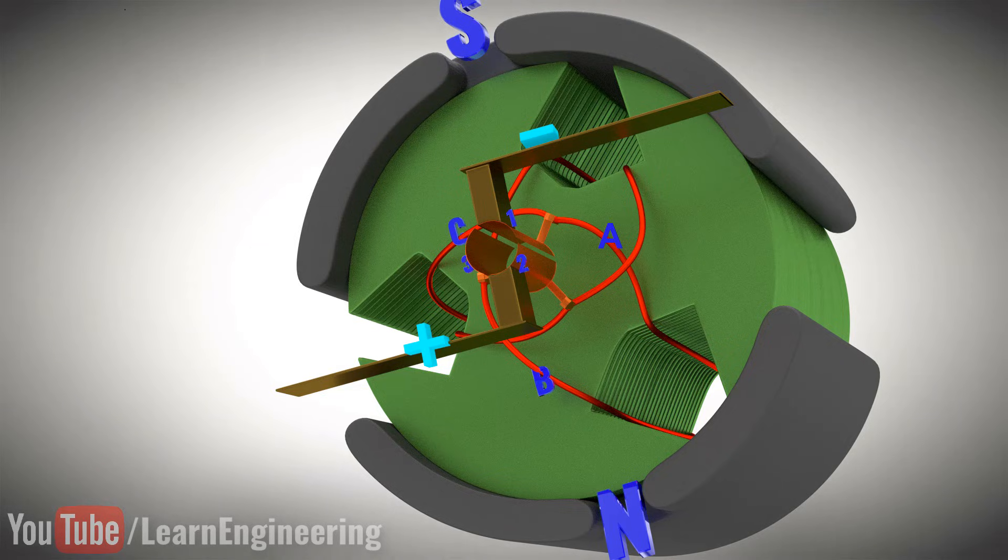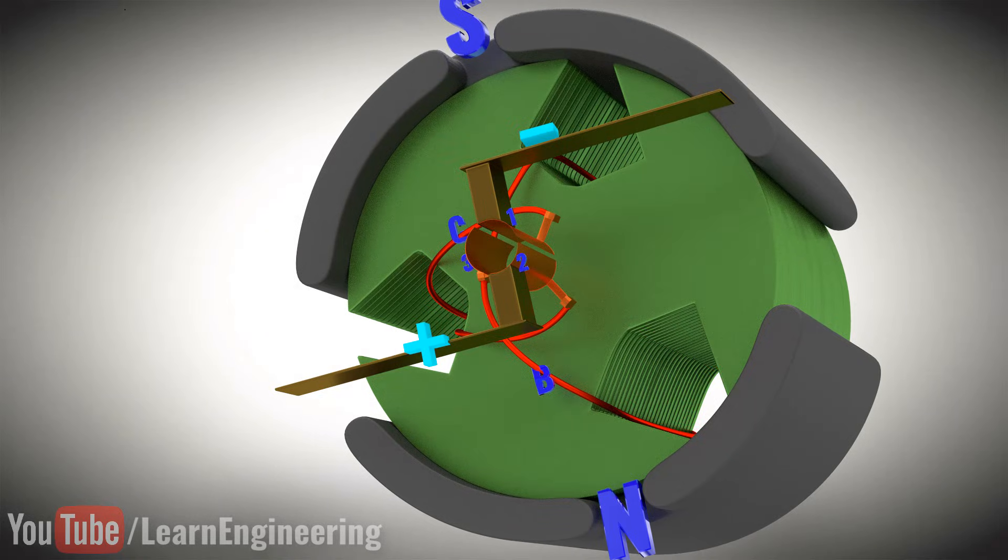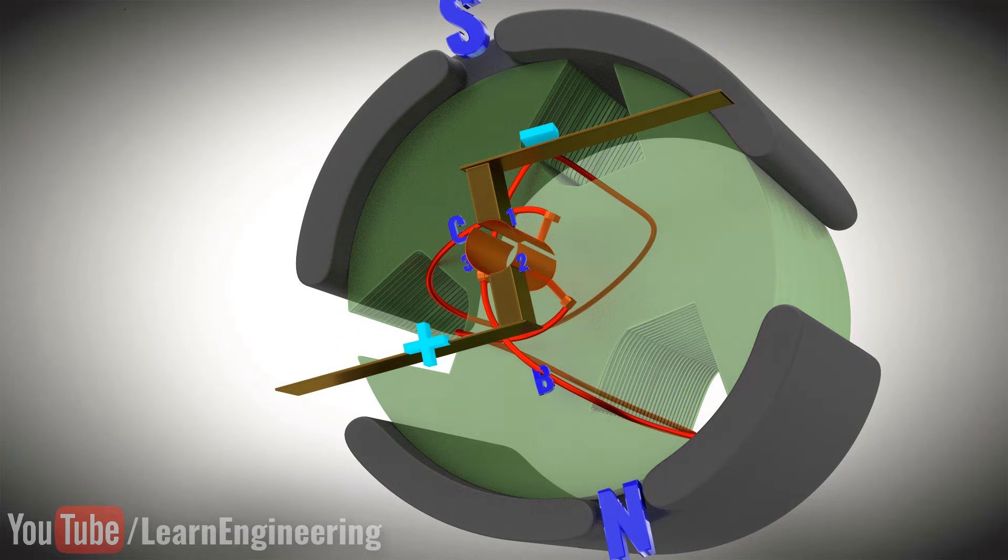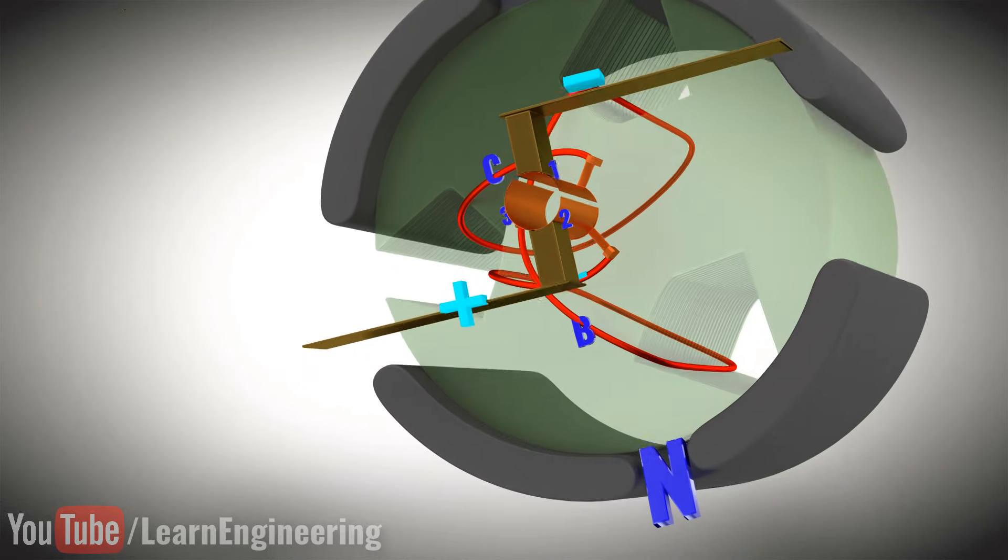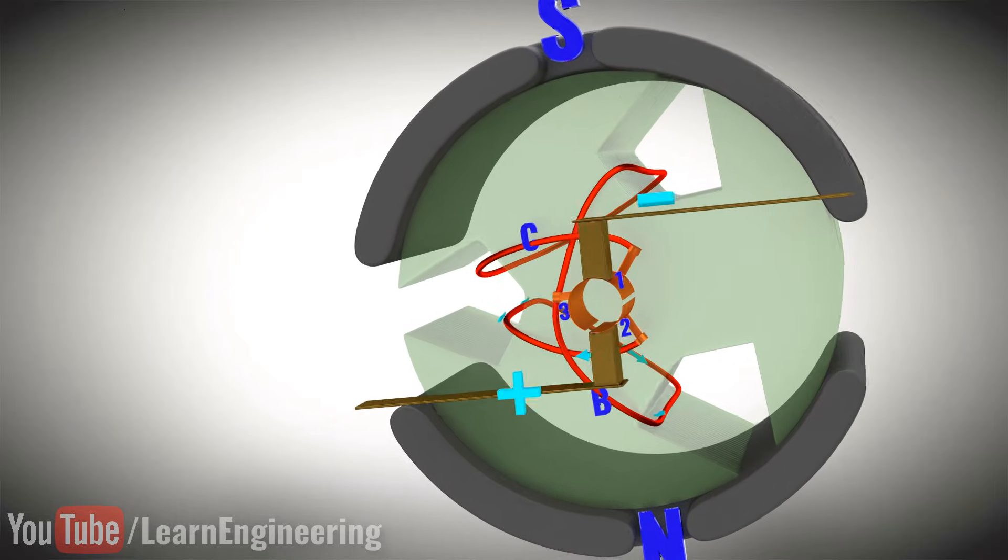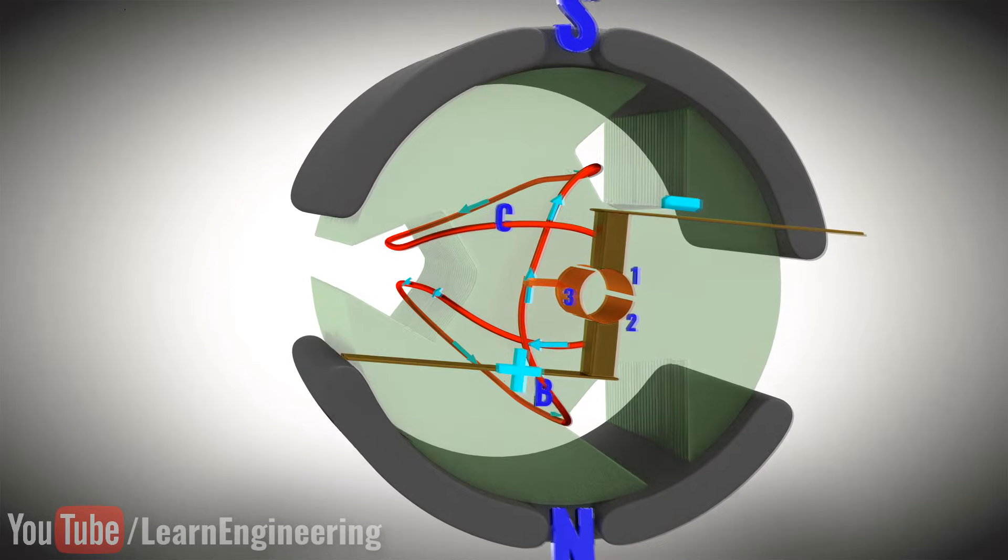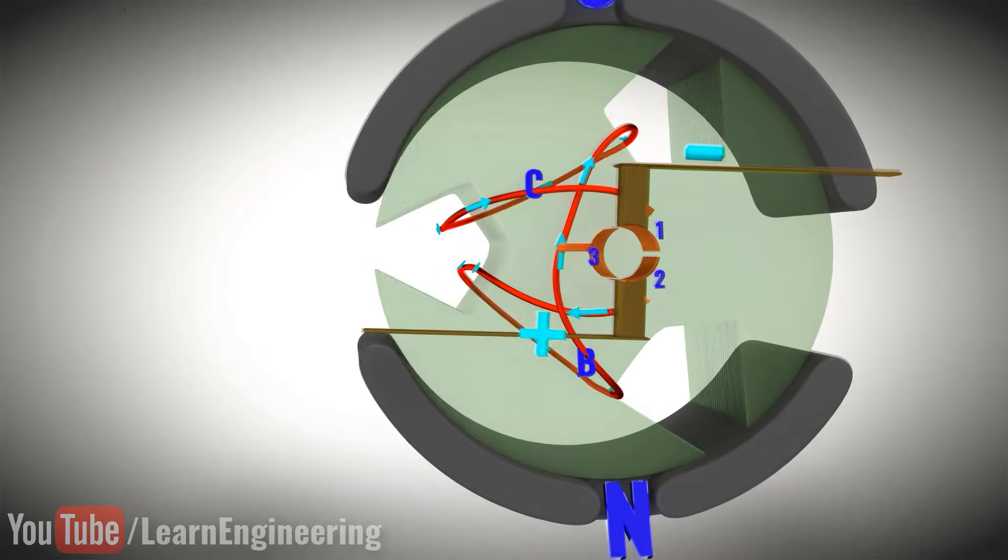Let's hide coil A in order to understand current flow in a better way. As you follow the coil, current will start from terminal 2, flow through coils B and C respectively, and finally end up in commutator ring 1.